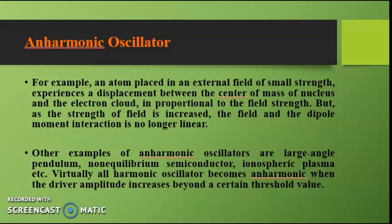For example, when an atom is placed in an external field of small strength, it experiences a displacement between the center of mass of the nucleus and the electron cloud, which is proportional to the field strength. But as the field strength increases, the field and dipole interaction is no longer linear. Other examples of anharmonic oscillators are the large-angle pendulum, nonlinear semiconductors, ionospheric plasma, and so on. Virtually all harmonic oscillators become anharmonic when the driver amplitude increases beyond a certain threshold value.